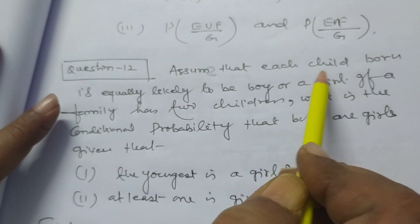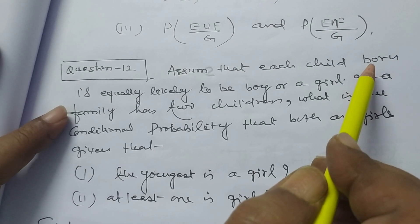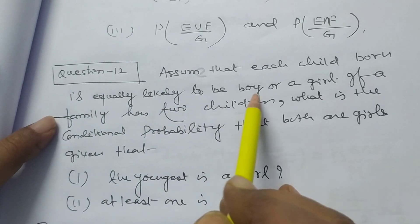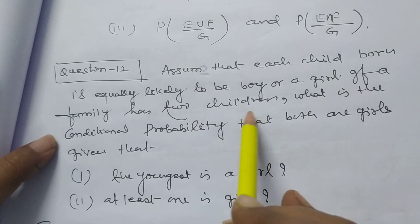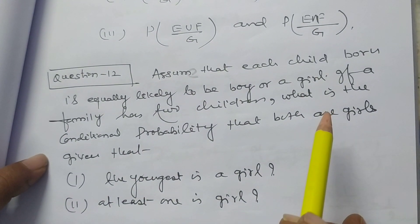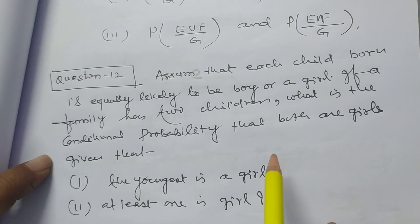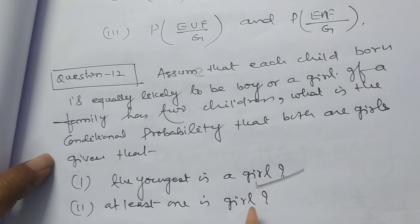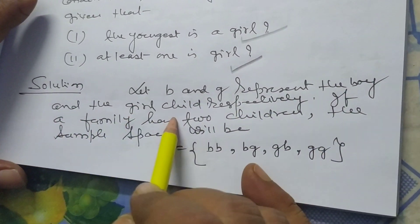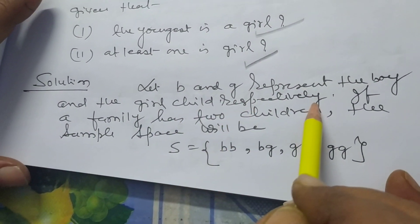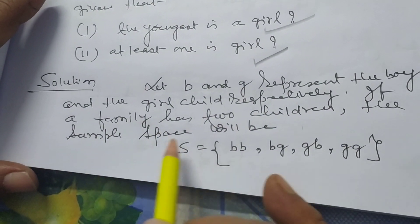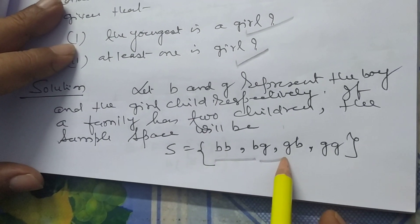Assume that a child born is equally likely to be a boy or a girl. If a family has two children, what is the conditional probability that both are girls, given that the youngest is a girl, and given that at least one is a girl? Let B and G represent boy and girl. The sample space is {BB, BG, GB, GG}.